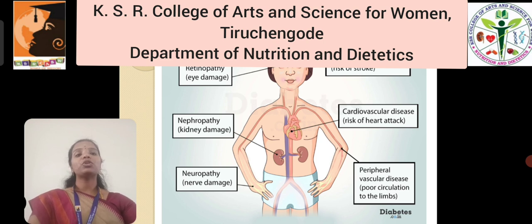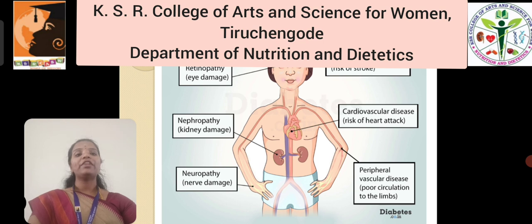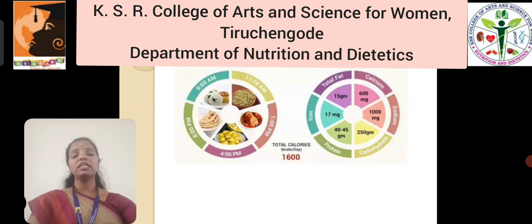Macrovascular complications include cerebrovascular disease with risk of stroke and brain stroke, cardiovascular disease with risk of heart attack, and peripheral vascular disease causing poor circulation to the limbs.